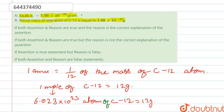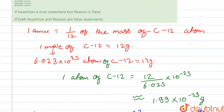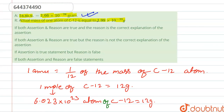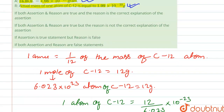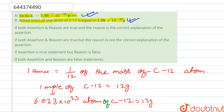We have just calculated this. The actual mass of one atom of carbon-12 is 1.99 × 10⁻²³ gram — this is also correct. However, the reason is not a correct explanation of the assertion, because the assertion is about 1 amu being 1/12th of the mass of a carbon-12 atom, while the reason only states the mass value. So both assertion and reason are true, but the reason is not a correct explanation of the assertion — the answer is option B.